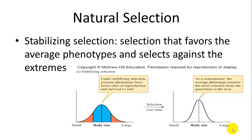When evolution is occurring, those assumptions break down. One example is natural selection, and there are different types. Stabilizing selection: a trait generally has a normal distribution, but the extreme phenotypes have lower rates of reproduction, so the ones out on the tails are selected against, causing the curve to become more central.